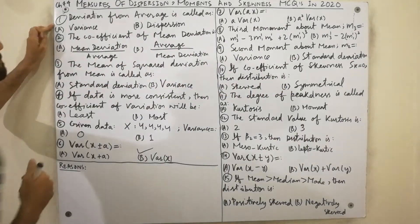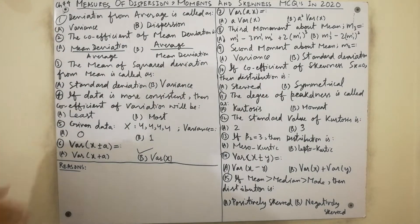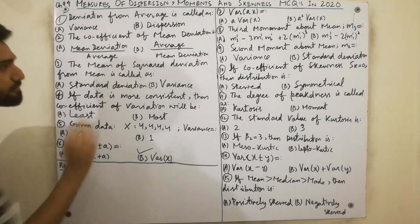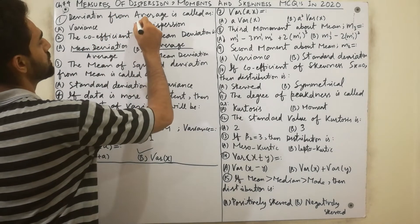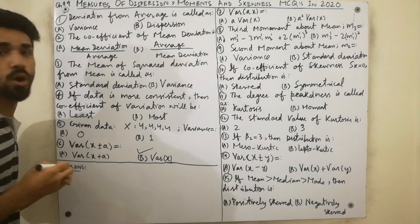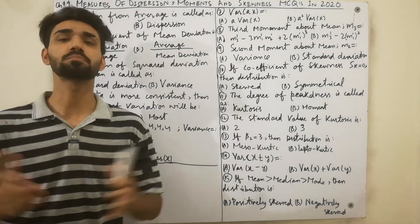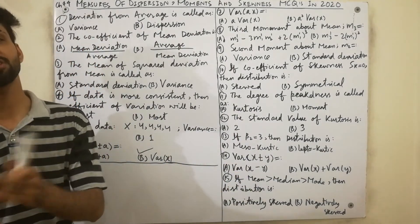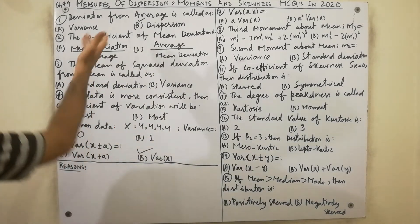The first MCQ is very easy: deviation from average is called dispersion. We can say that deviation from average is called dispersion — a very simple definition.